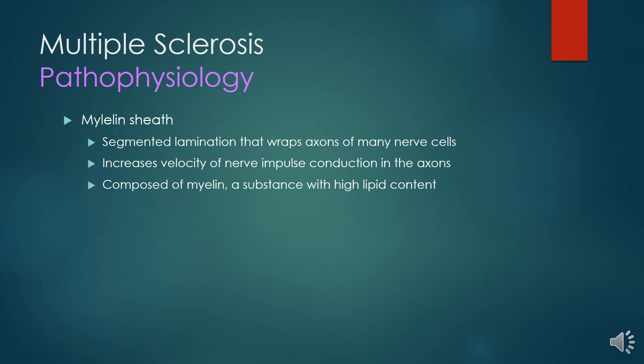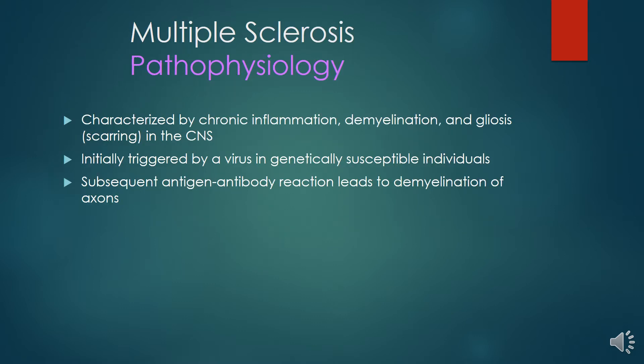In pathophysiology, the myelin sheath has a segmented lamination that wraps the axon and many nerve cells. It increases the velocity of nerve impulse conduction in the axon and is composed of myelin substance, a substance that has high lipid content. Multiple Sclerosis is characterized by chronic inflammation, demyelination, and gliosis or scarring in the CNS, initially triggered by a virus in genetically susceptible individuals.